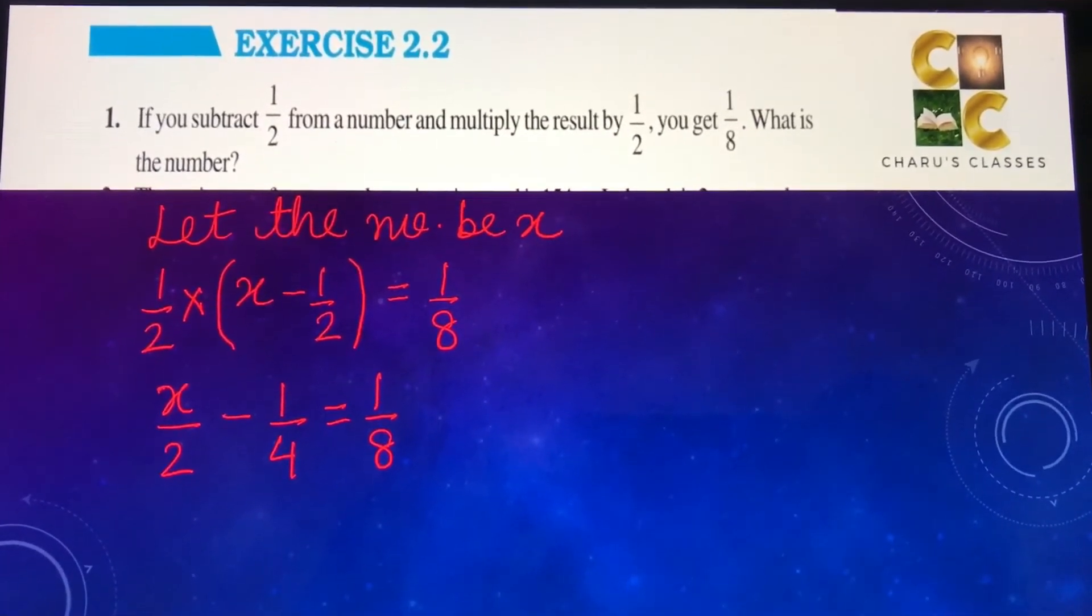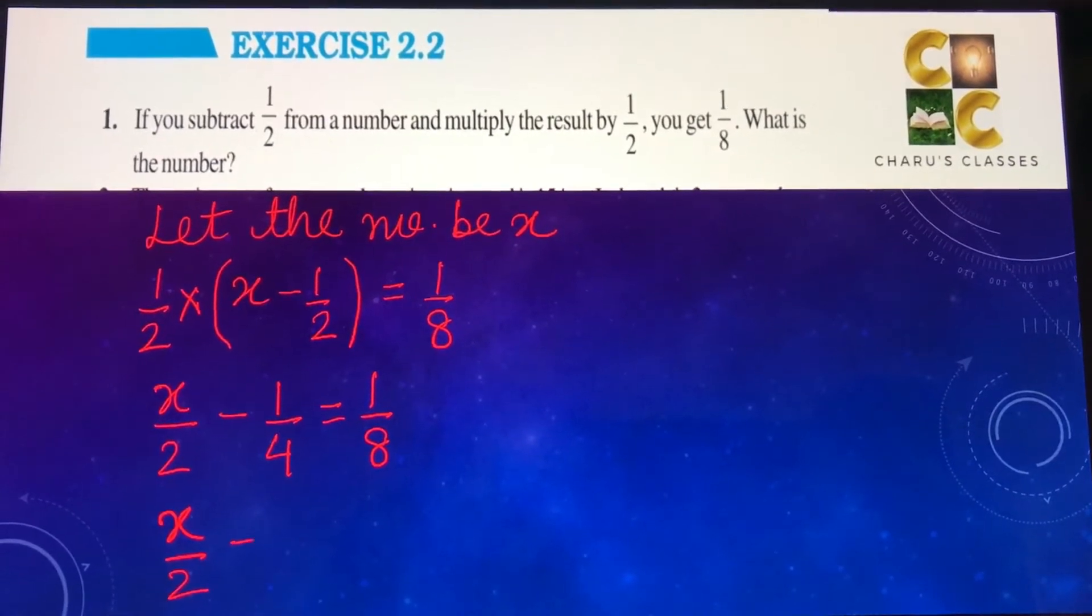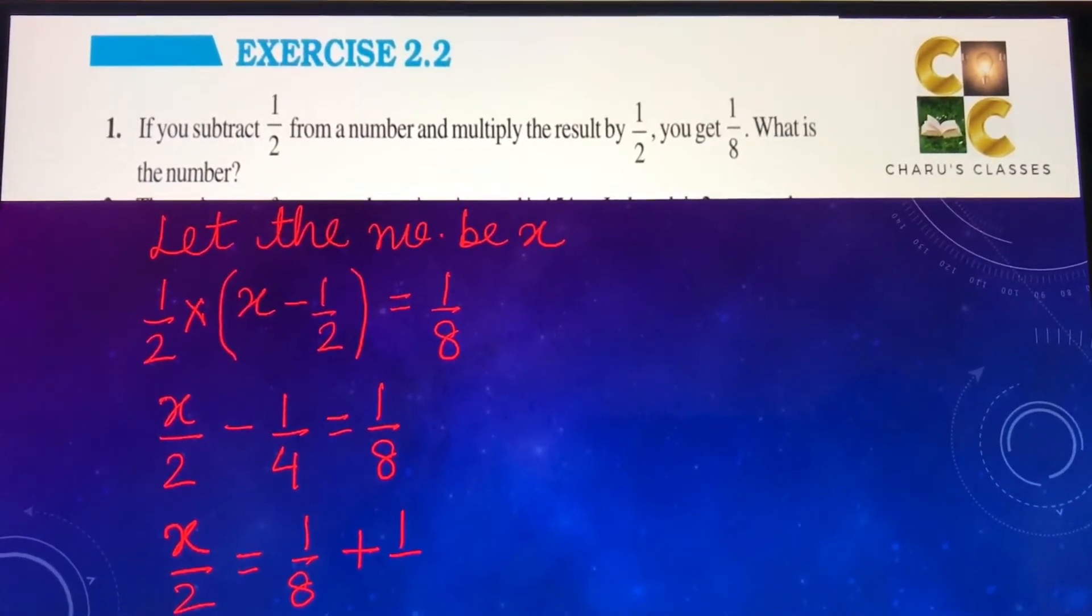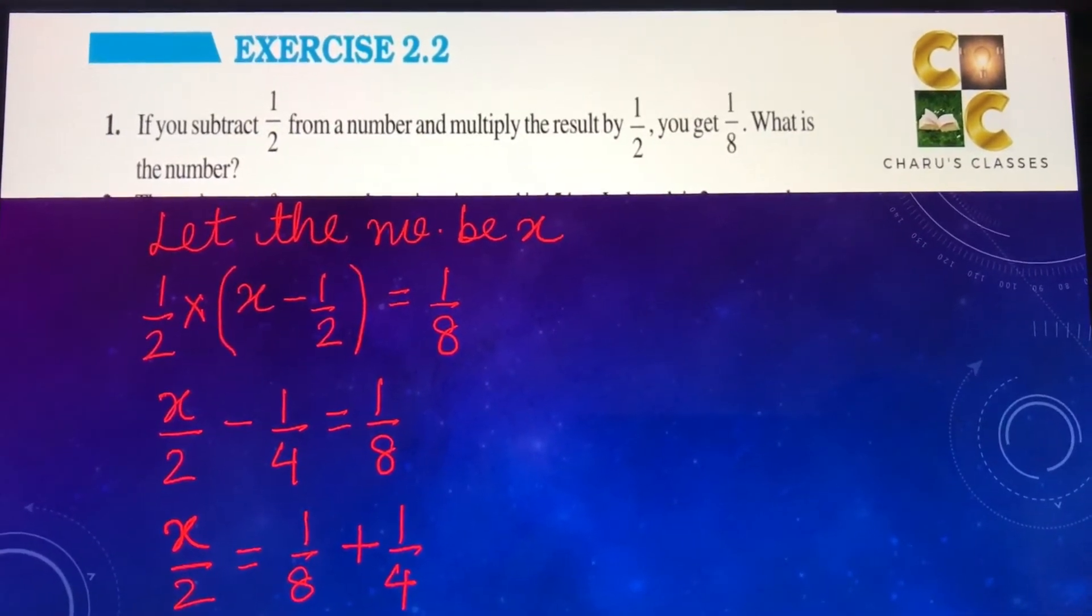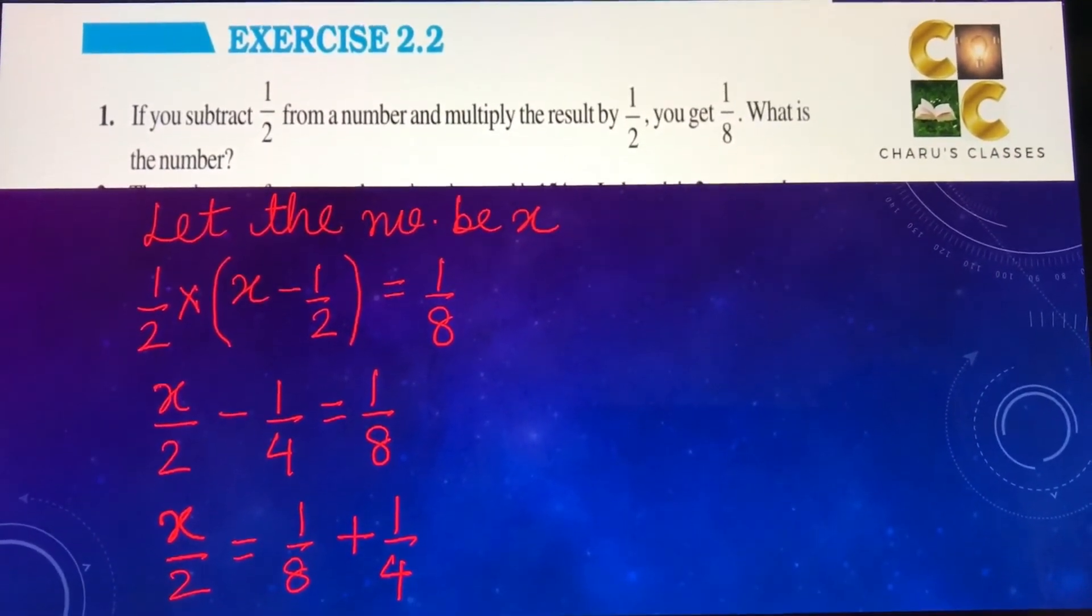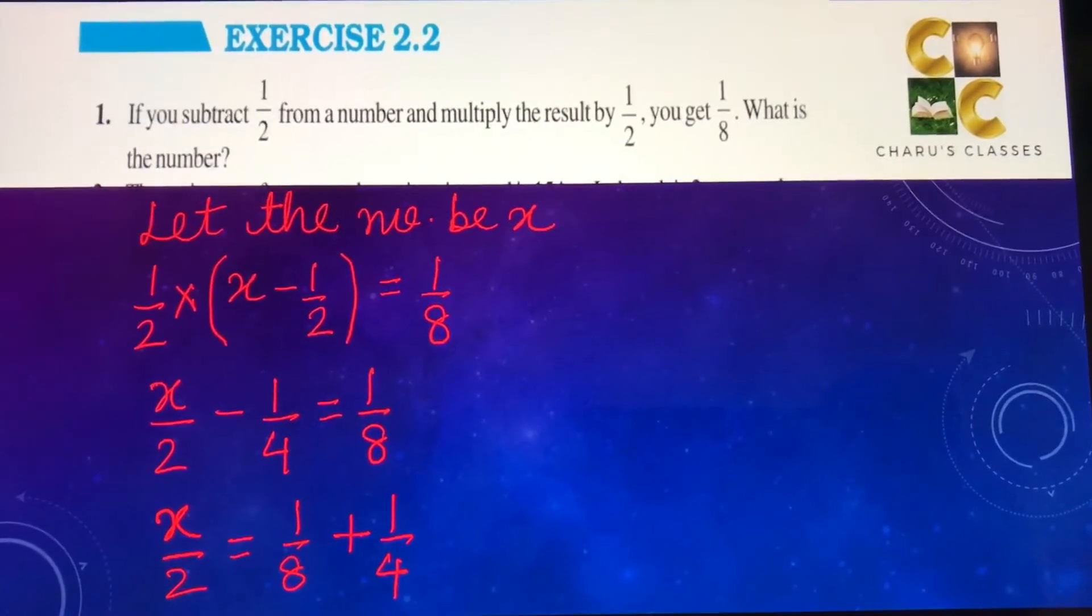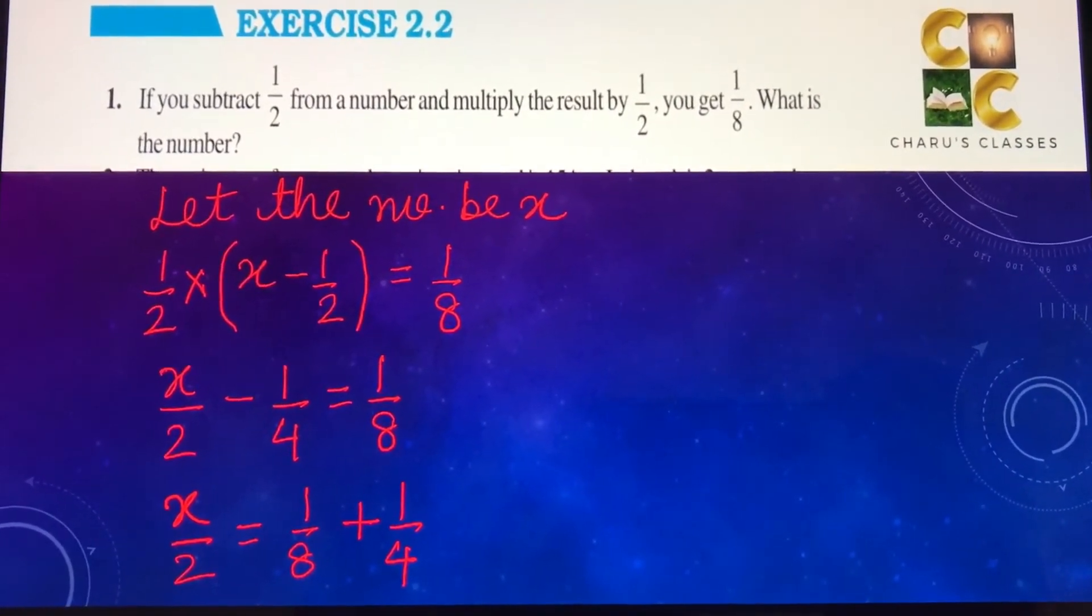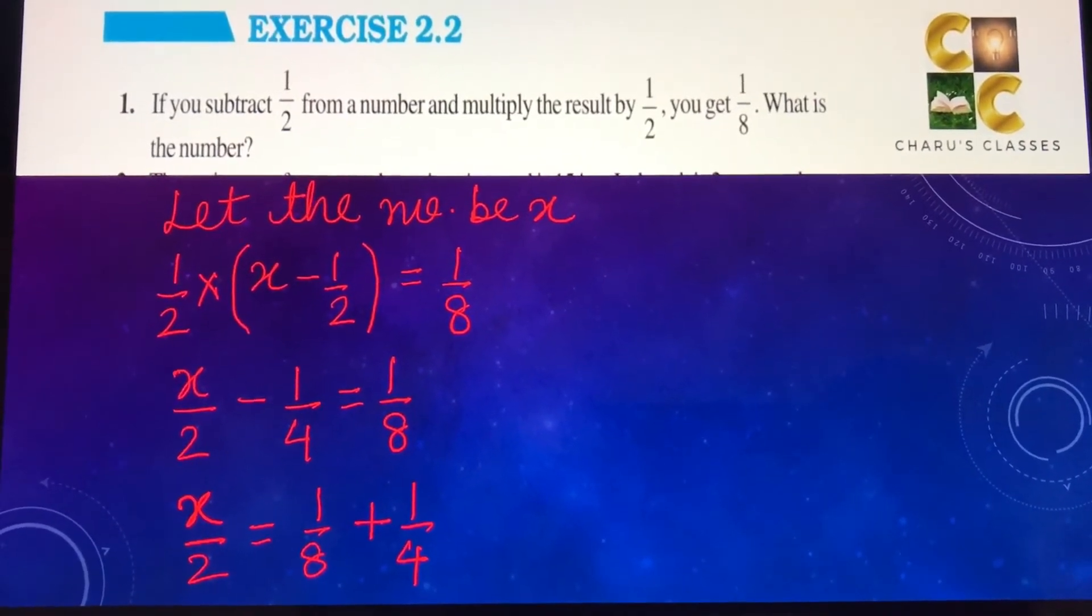We can shift minus 1 by 4 to the right hand side. It will become 1 by 8 plus 1 by 4. Fractions can be solved by taking the LCM of the denominators. So the LCM of 8 and 4 will become 8.